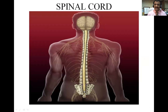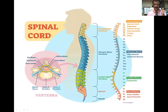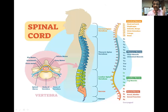Below that you can see the cauda equina. The spinal column has five types of vertebrae: cervical, thoracic, lumbar, sacral, and coccygeal. Corresponding to all these vertebrae there are spinal nerves, and spinal nerves are 31 pairs. Total separate vertebrae are 33 in number. There are eight cervical spinal nerves, 12 thoracic spinal nerves, five lumbar spinal nerves, five sacral spinal nerves, and one pair of coccygeal spinal nerves, making 31 pairs altogether.